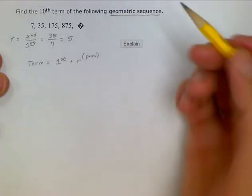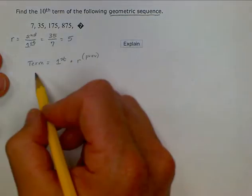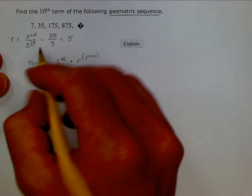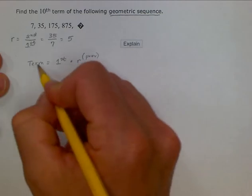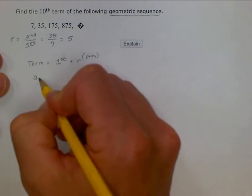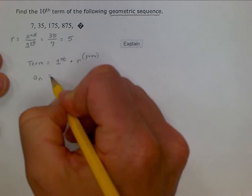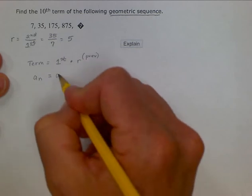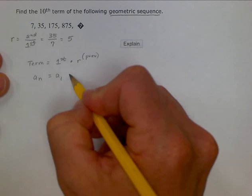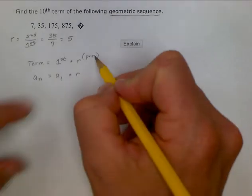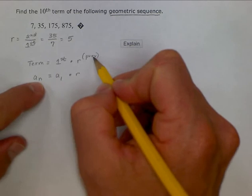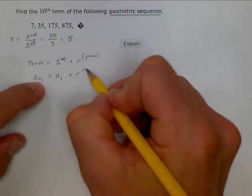So if we write that out in terms of a sub n, the term is going to be described by a sub n. Our first term would be a sub 1, and then we would have our common ratio raised to the previous term. The previous term, the one right before n, would be n minus 1.